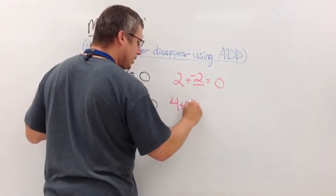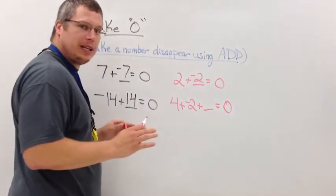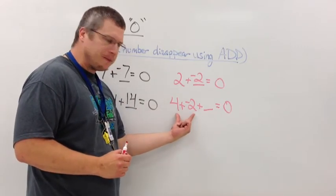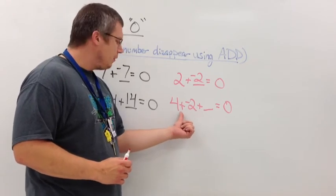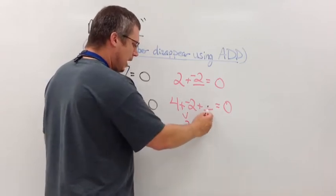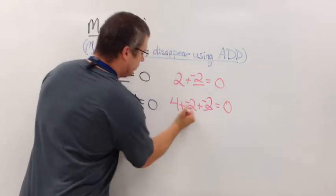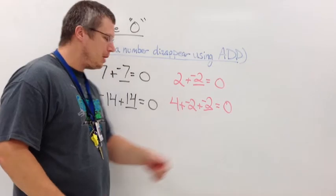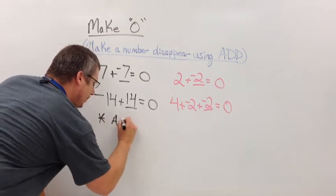4 plus negative 2 plus what makes absolutely nothing? What one number could I add to make both of these numbers disappear? Well first of all you have to say okay how much are these put together? 4 plus negative 2 is a positive 2. What's the opposite of positive 2? Negative 2. By adding this one number I would make the original number disappear.